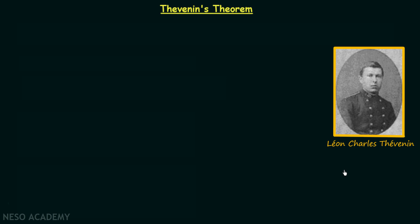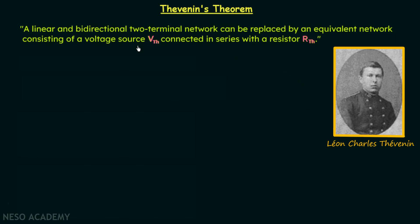According to the statement of Thevenin's theorem, a linear bi-directional two-terminal network can be replaced by an equivalent network consisting of a voltage source VTH connected in series with a resistor RTH. Thevenin's theorem provides a technique by which we can replace the fixed part of the circuit by an equivalent circuit having VTH connected in series with RTH.